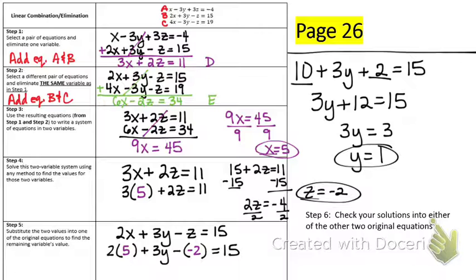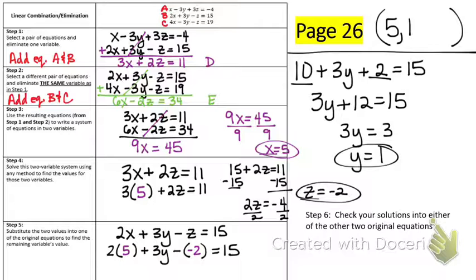So you write it as an ordered triple in alphabetical order. x is 5, y is 1, and z is negative 2. So let's do one more together — go to the next page and let's practice one more today.